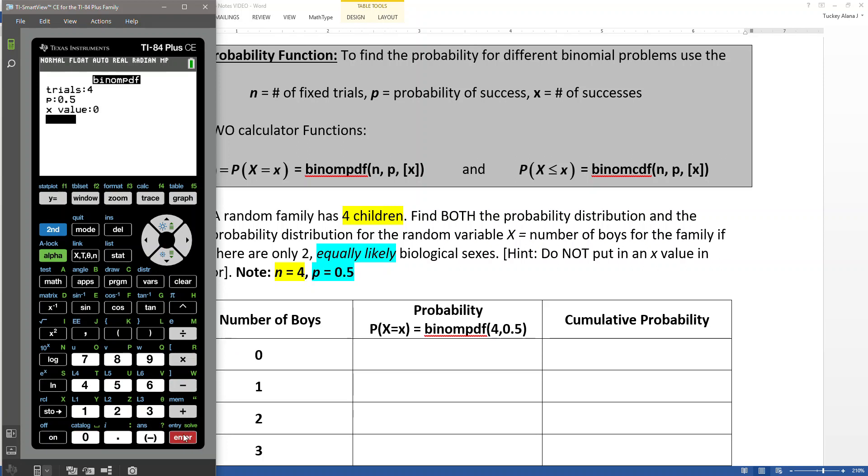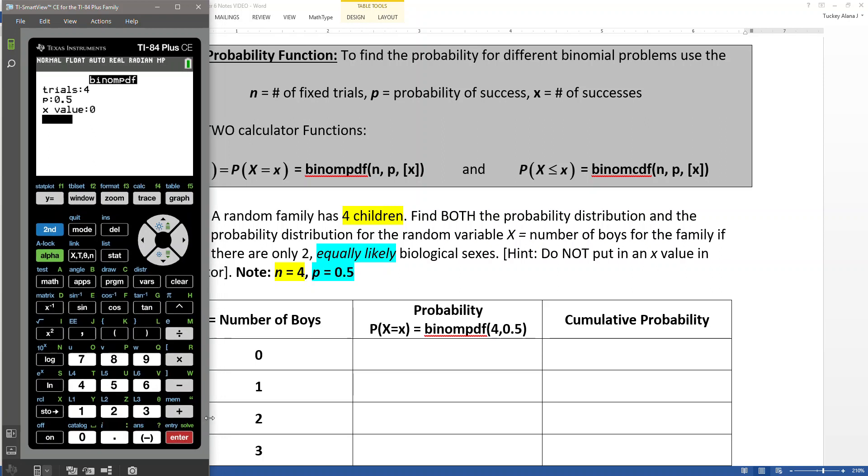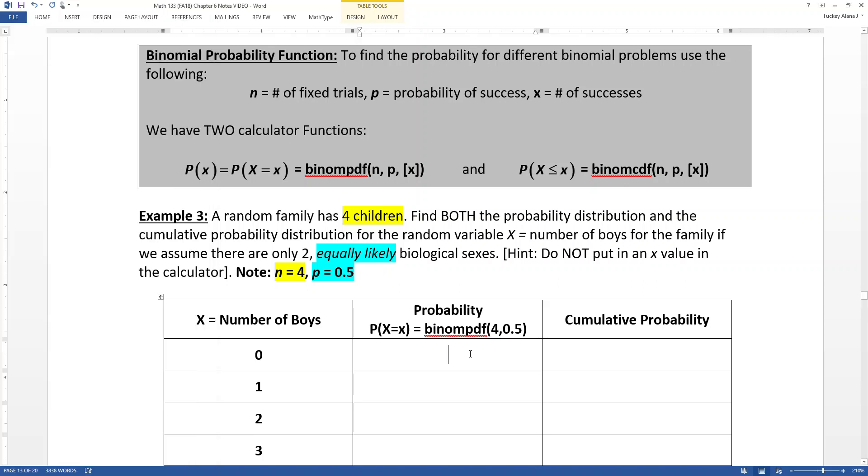And I'm going to press paste. Now notice that's not calculate, that's paste. This is not quite the same as what we were doing before. So I'm going to click enter, and it's going to paste it onto my home screen for me. It hasn't run it, so in order to get it to run, I actually have to hit enter again. So I hit enter again, it'll find it. So it finds this probability right here at 0.0625.